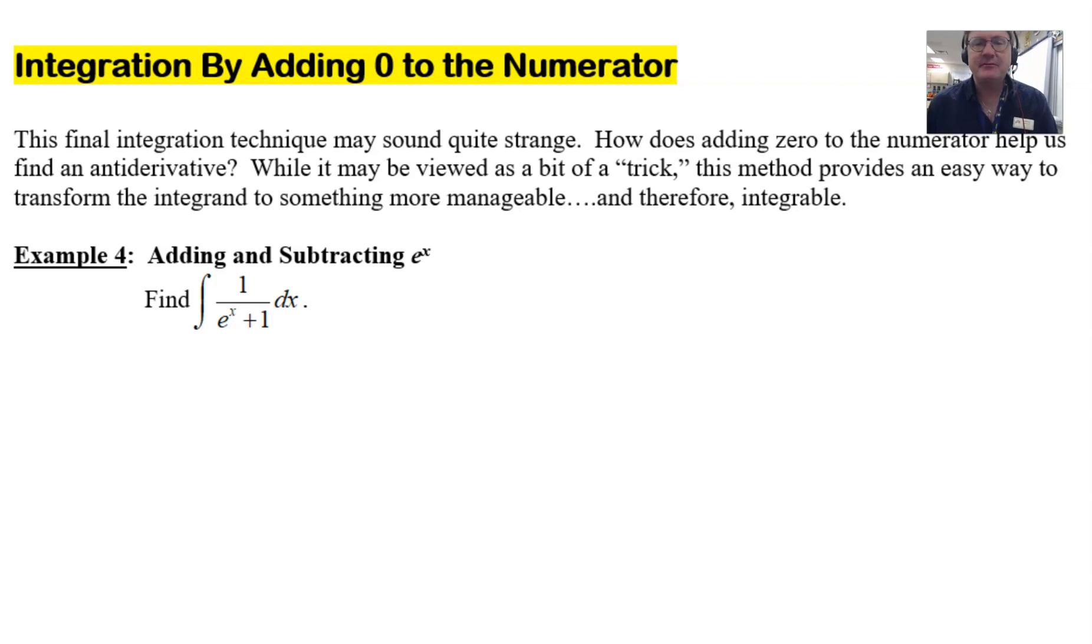Final integration technique sounds a bit strange. Integrating by adding zero to the numerator is the title. Well, how does adding zero to the numerator help us find an antiderivative? Well, while it may be viewed as a bit of a trick, this method provides, like I said, an easy way to transform the integral into something that's more manageable, and therefore something that we can integrate.